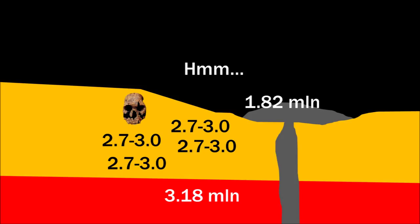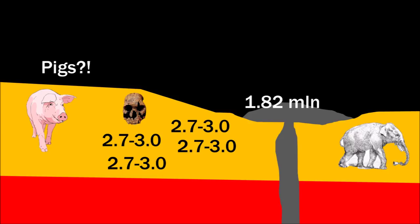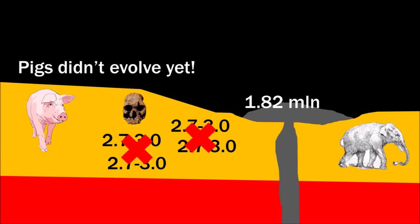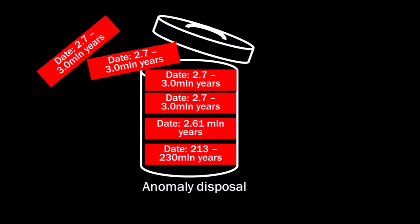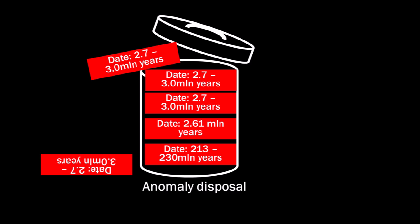What more fossils did you find in that layer? Well, we also found pigs and elephants. Pigs? Yes, pigs. Pigs didn't evolve yet. Those dates can't be right. Get rid of those ages. There.